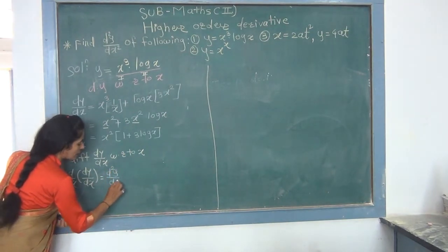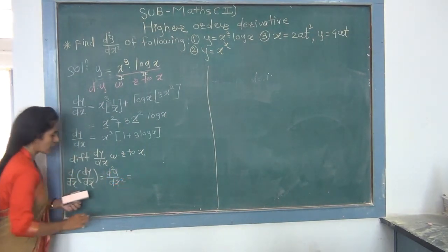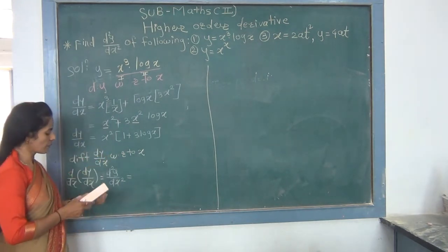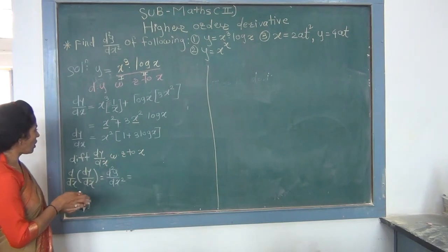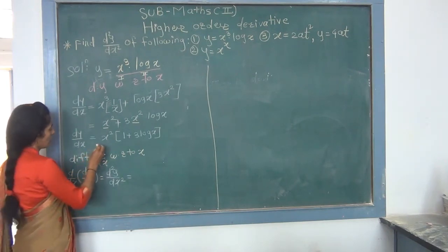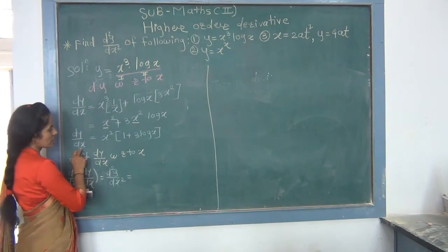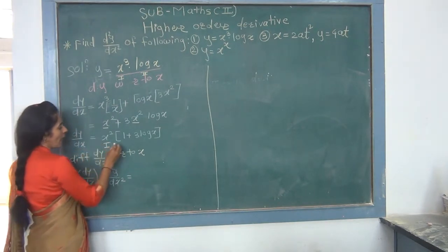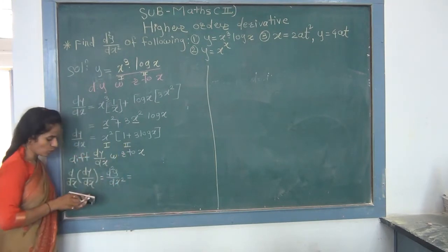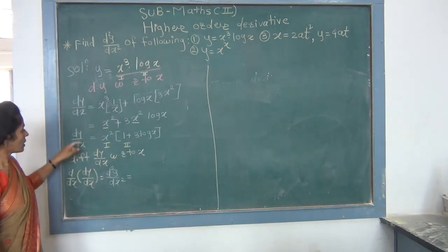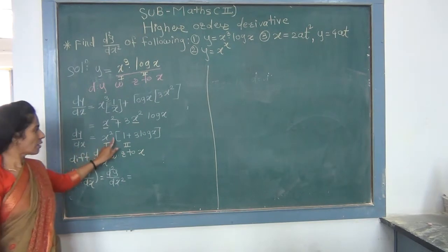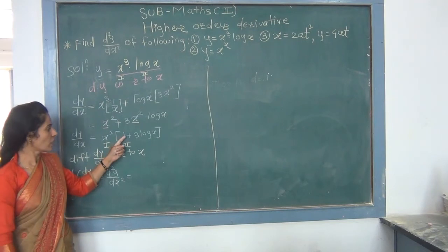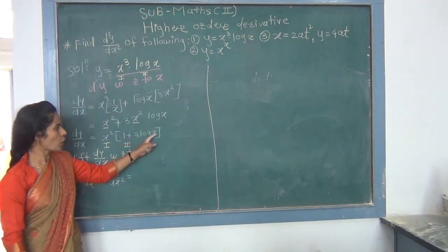Simplifying the right-hand side: x² · (3/x) = 3x, and (1 + 3·log(x)) · 2x = 2x + 6x·log(x). So d²y/dx² = 3x + 2x + 6x·log(x). Combining like terms, the final answer for the second order derivative is d²y/dx² = 5x + 6x·log(x).